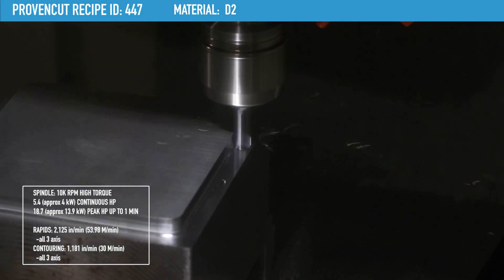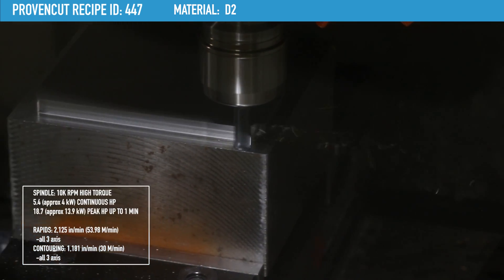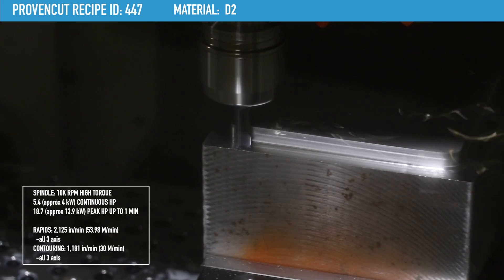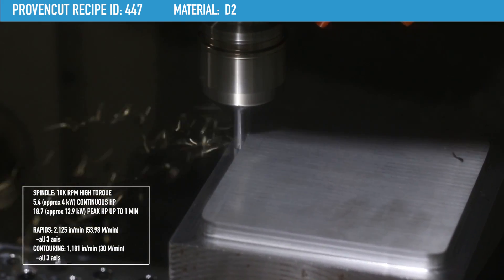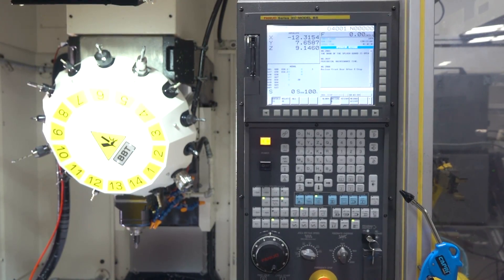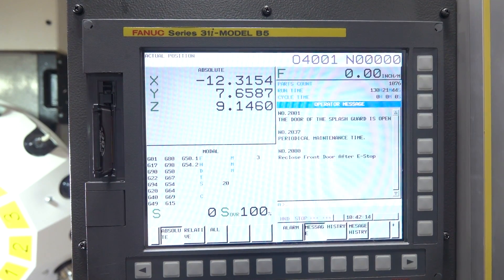Rapids are 2,125 inches a minute in all three axes and 1,181 inches a minute all three axes for contouring. And the control is the 31i B5 FANUC control.